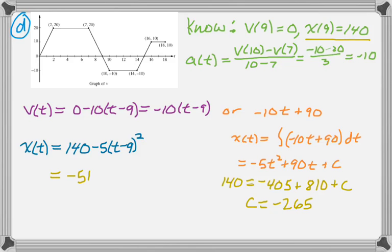So, another way of writing X of T is negative 5T squared plus 90T minus 265, which actually is exactly equivalent to what I got before, but I do think it's a more common way to do the problem. So, anyway, that's the whole problem, and I hope you found this helpful, and good luck.